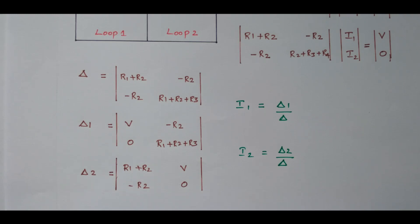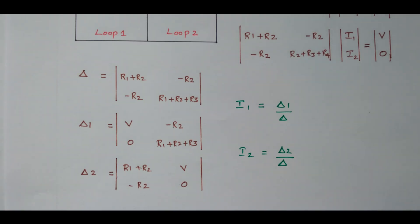In this video we discussed mesh analysis — how to find current in a closed loop — using two methods: equation method and matrix method. We saw how to frame the equations and how to frame the matrix. The example problems for mesh analysis using both methods are available in the next video; the link is in the description box.